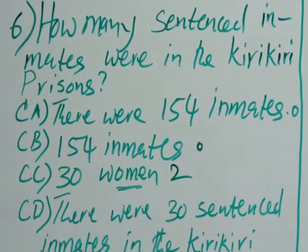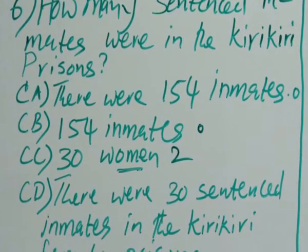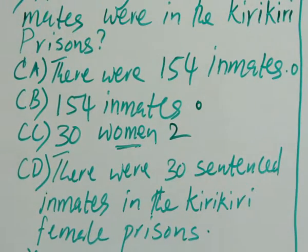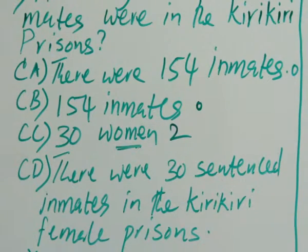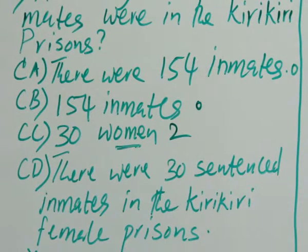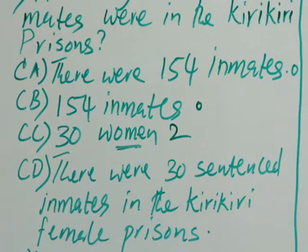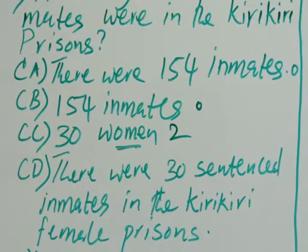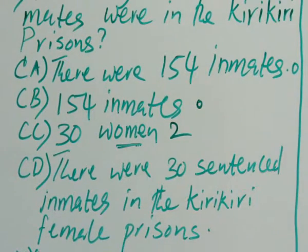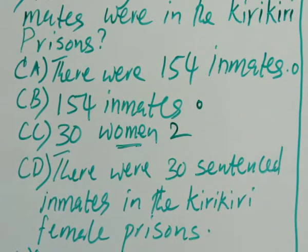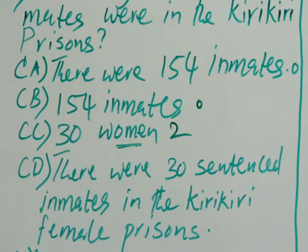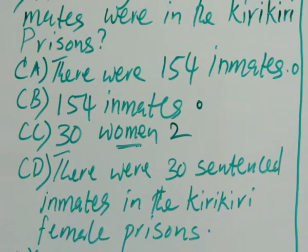Candidate A simply said that there were 154 inmates. That is not possible because we are told that there were 154 women not convicted that are in the prison. It is not reasonable to agree that all the women in the prison have not been sentenced. And besides, we had already been told in number 184 showing that yes, there are some others who are not in this category of awaiting trial.